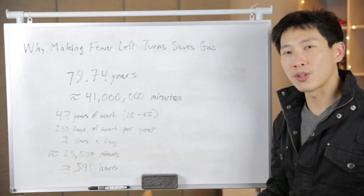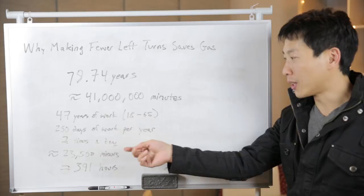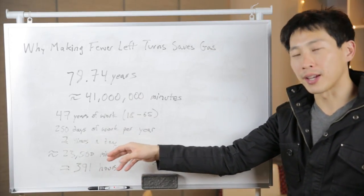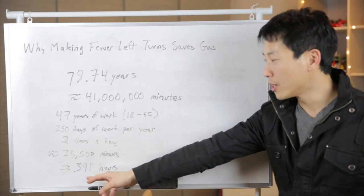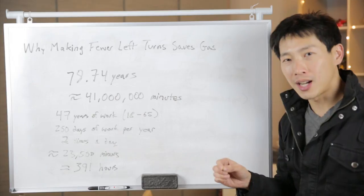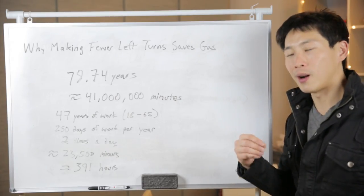You get 250 days of work every single year. Now you have to go to work and then come back. So then this is two times a day. You multiply all this out, it's 23,000 minutes. And if you convert this to number of hours, it's 391 hours. This is quite a lot for a very tiny fractional change in how you drive.